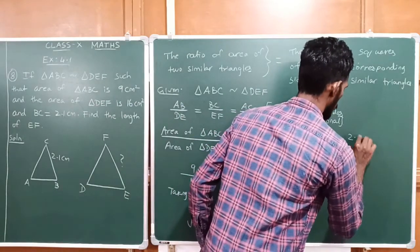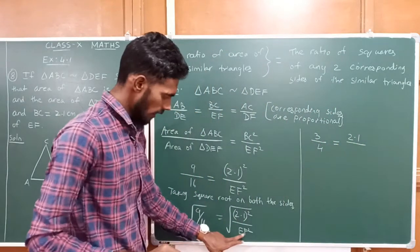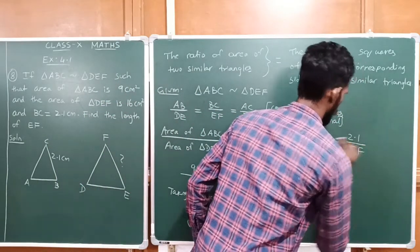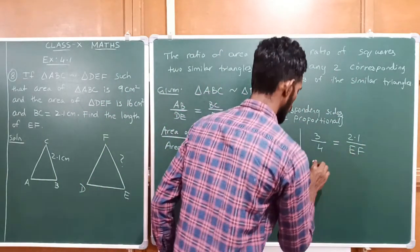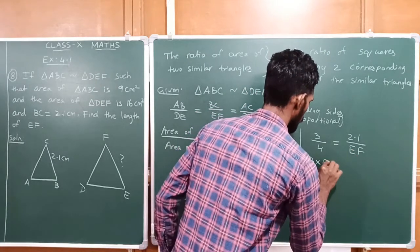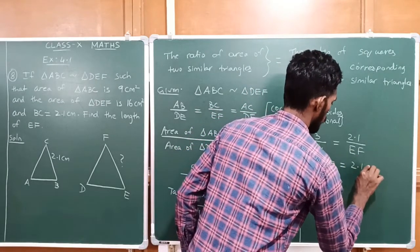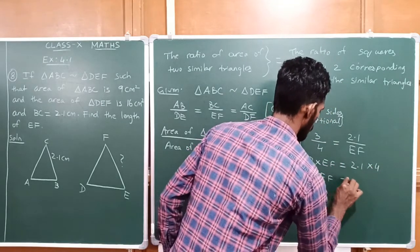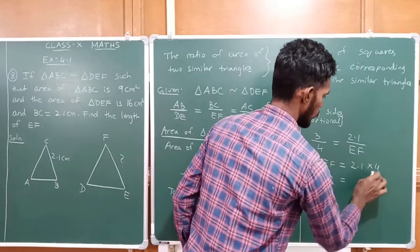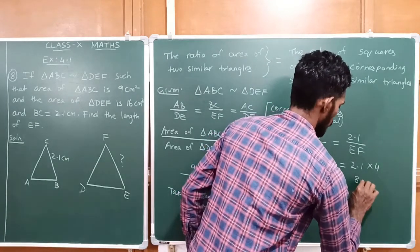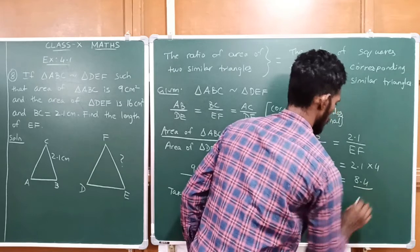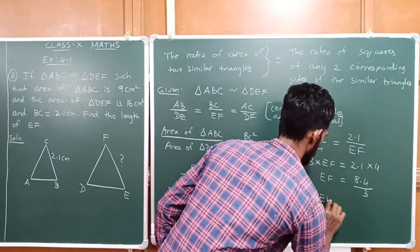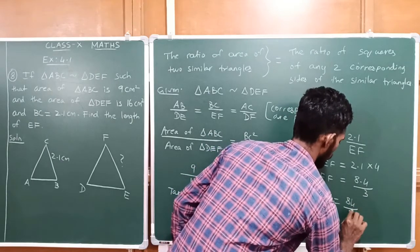So the numerator becomes 2.1 divided by EF. Therefore EF is equal to 2.1 multiplied by 4, which gives 8.4, divided by 3. That is 8.4 by 3, which becomes 84 by 30.